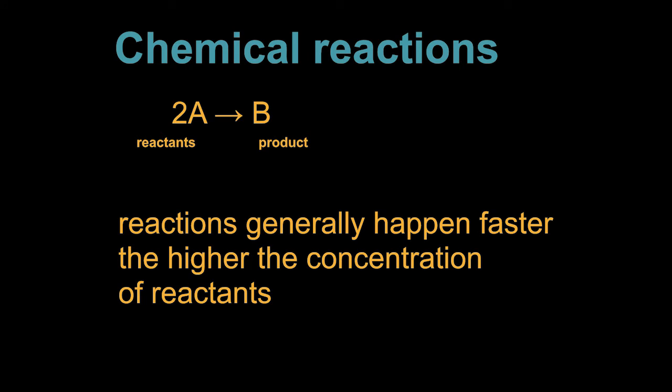As a general rule, reactions happen faster the higher the concentration of the reactants, the left-hand side of the arrow. In this case, the reaction would happen at a rate roughly proportional to the square of the concentration of A, because two A molecules have to meet for the reaction to proceed. This simple fact that reactions happen faster when there are more reactants is crucial in understanding how reaction networks give rise to dynamics.